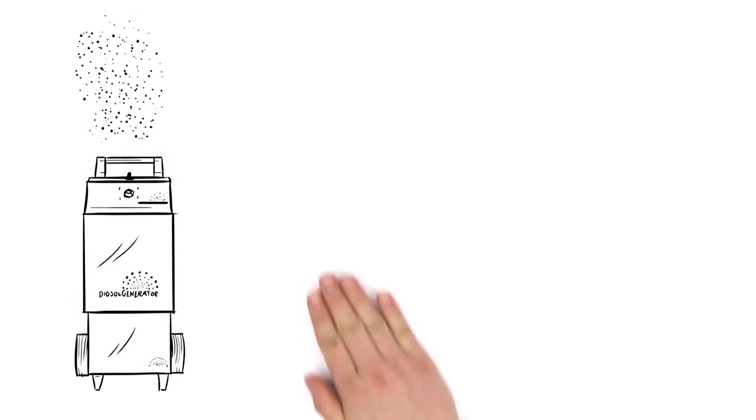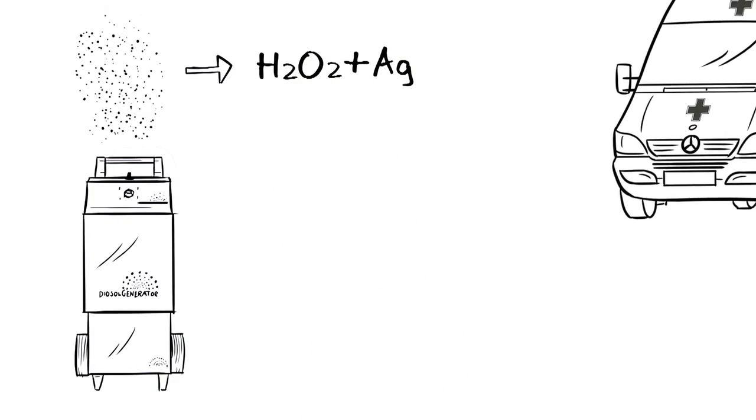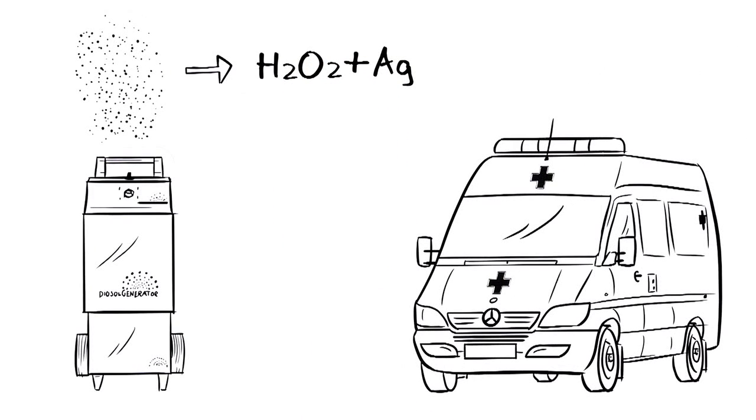The Dioprotection system is an aerosol disinfection system. The fine diosol hydrogen peroxide mist reaches every nook and cranny and enables a disinfection rate of almost 100% for the ambulance.